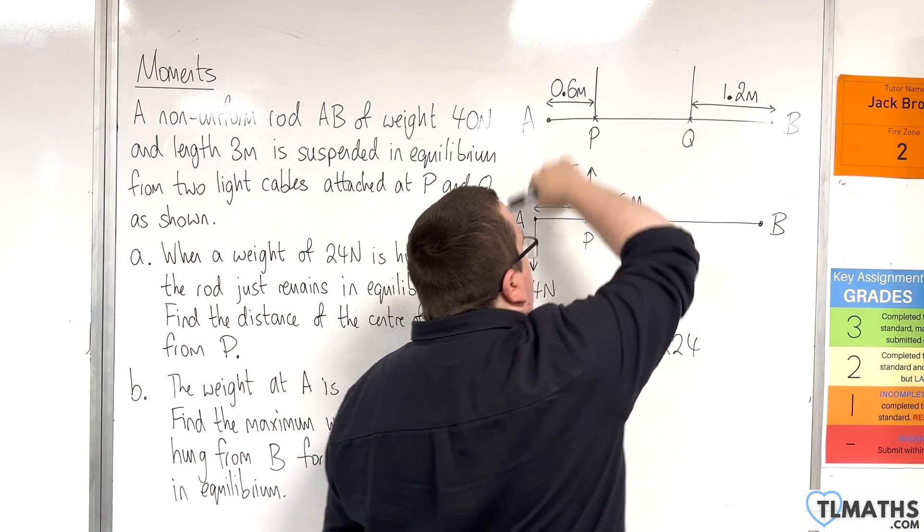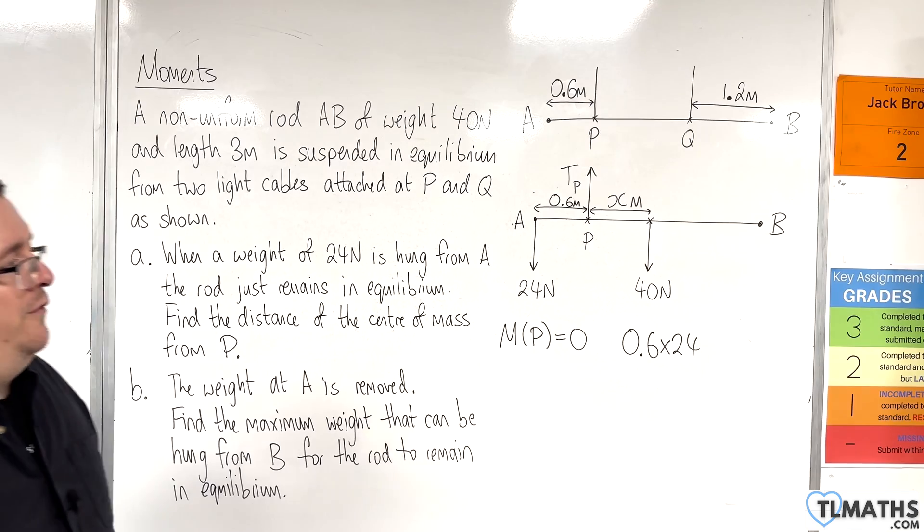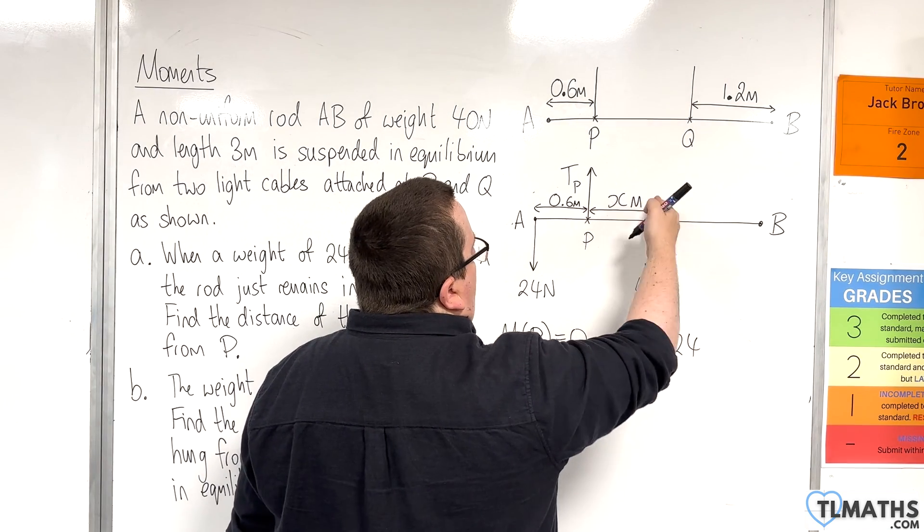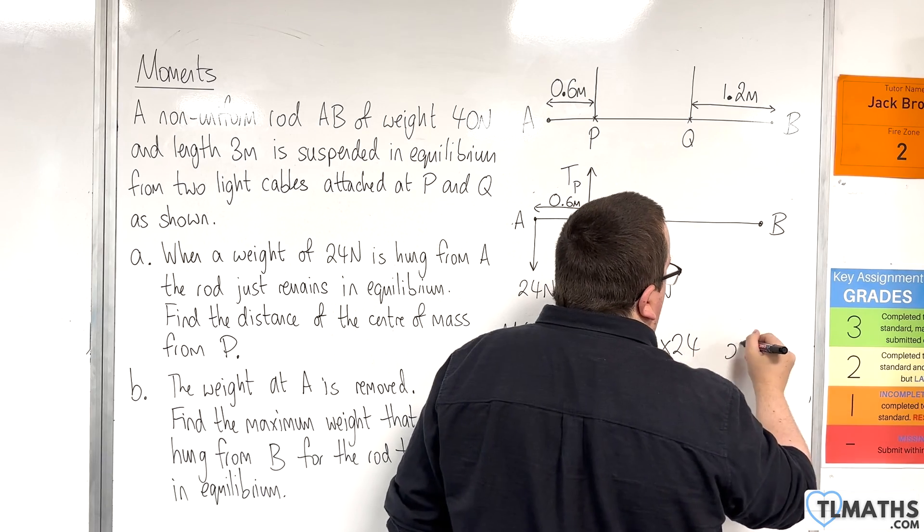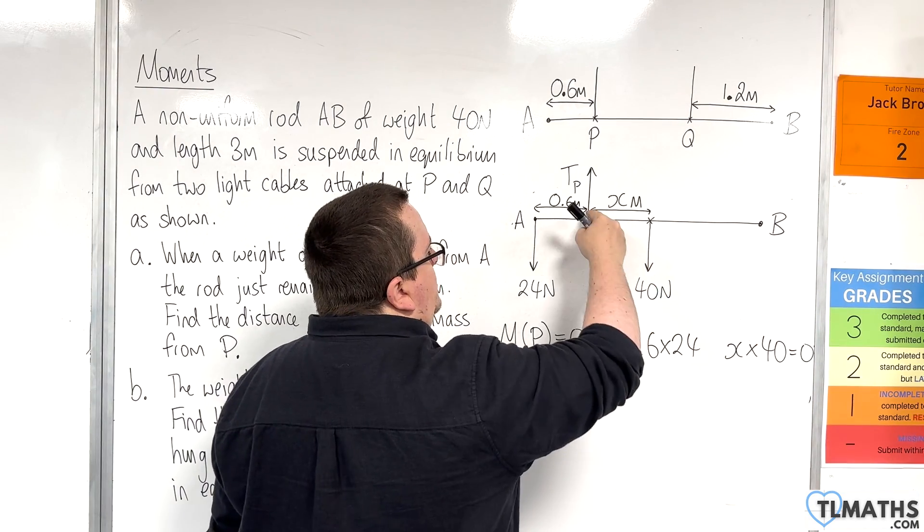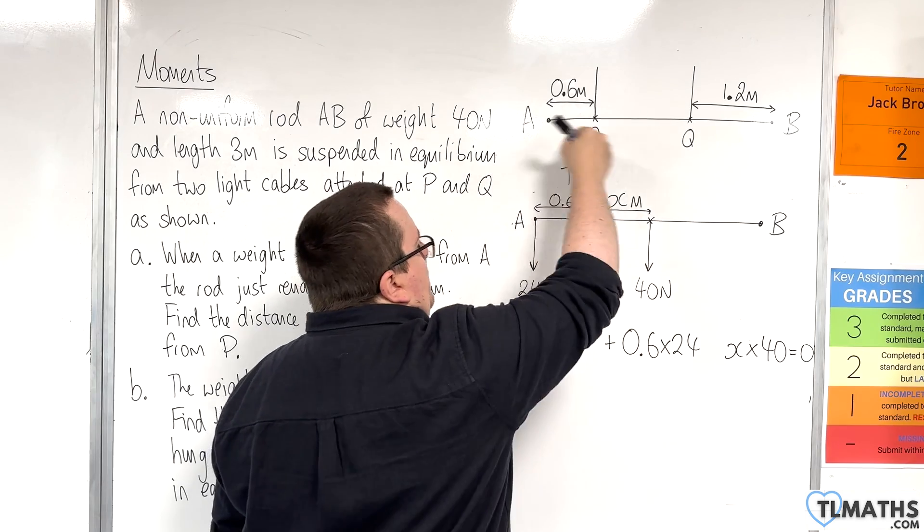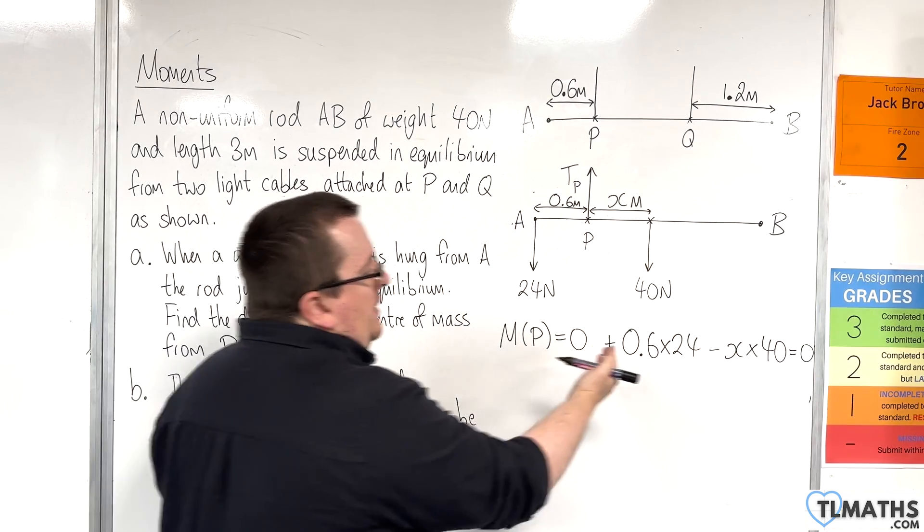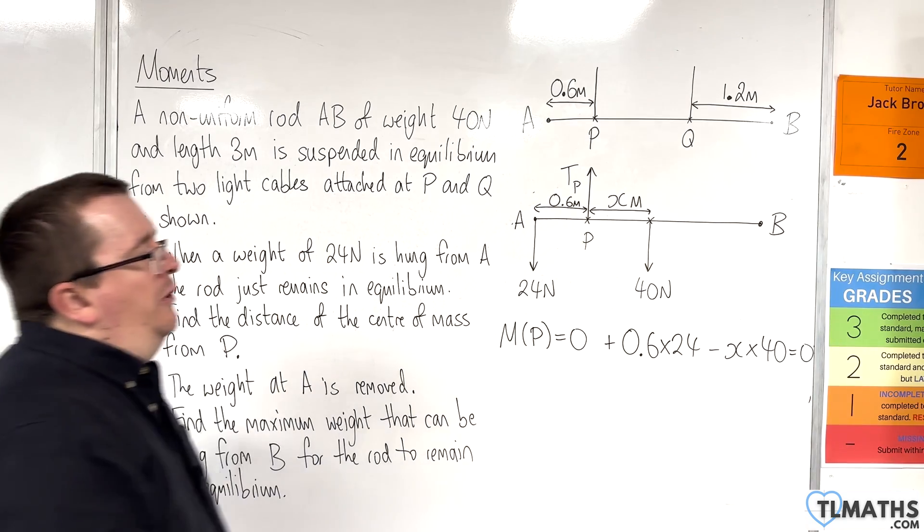And that's going to give me an anti-clockwise motion, because it's trying to push its way down and twist around that way. That turning effect. So that's positive. And then we're X metres away from the 40 newton force. So X times 40. And that's going to try and push it around this way. So clockwise motion, so that's negative. And it's going to be equal to zero because we're in equilibrium.